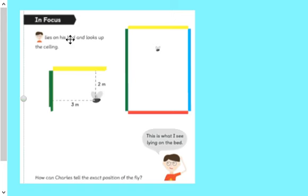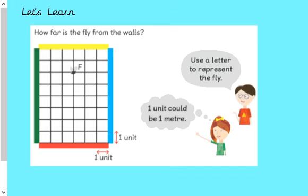Okay, the in focus task this morning is a young man there lying on his bed. When he looks up at the ceiling, it's a rectangular ceiling, he can see a fly. What we're looking to try and do is to try and describe the exact position of that fly. Okay, the only clues that were given are that the fly is two meters from the yellow wall and three meters from the green wall. What we've got to try and do is think about how we might describe the position of the fly.